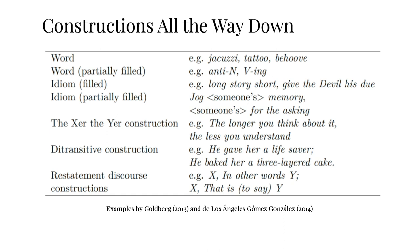Even syntactic constructions such as the ditransitive construction, which accounts for sentences such as he gave her a lifesaver, can be assigned conventional functions or meanings. We can also describe recurrent discourse patterns as constructions. One typical restatement construction, which you often find in academic texts, is the x, that is, y construction — that is, the construction specifies a relation between constructs that span more than one sentence.